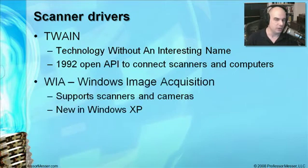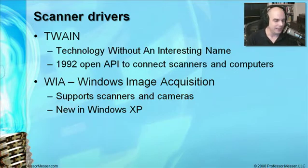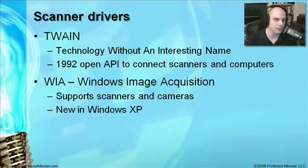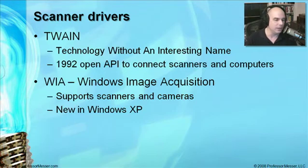Most newer scanners use something called Windows Image Acquisition, or WIA. Very often, especially in the newer scanners, they'll be able to communicate via both TWAIN and WIA. WIA is a broader perspective on grabbing images from a device — not just for scanners, but also applicable to cameras. You can see why this new format came out as digital cameras became popular, using the same way to talk to a scanner as to a digital camera. WIA was brand new in Windows XP and is also embedded into Windows Vista.